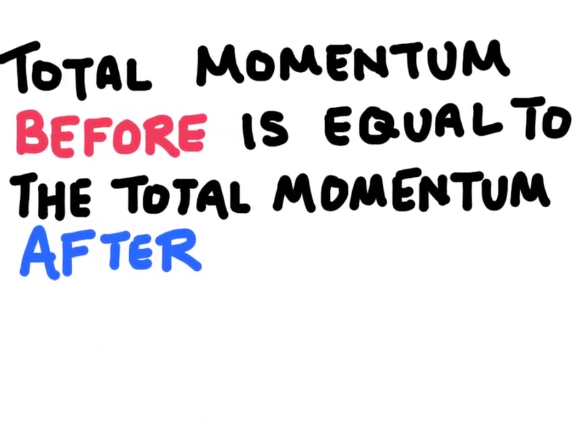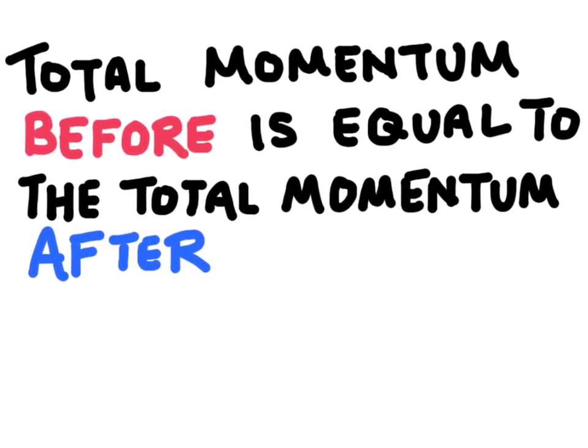The law of conservation of momentum says that the total initial momentum of objects before they collide is going to be equal to the total final momentum of the objects after they collide. This is under the condition that no external forces act on the system.